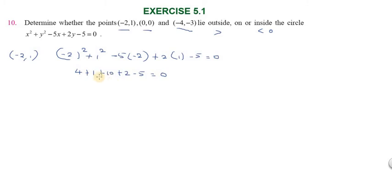Simplifying: 4 + 1 + 10 + 2 - 5 = 0, which equals 12. Since 12 > 0, the point lies outside.